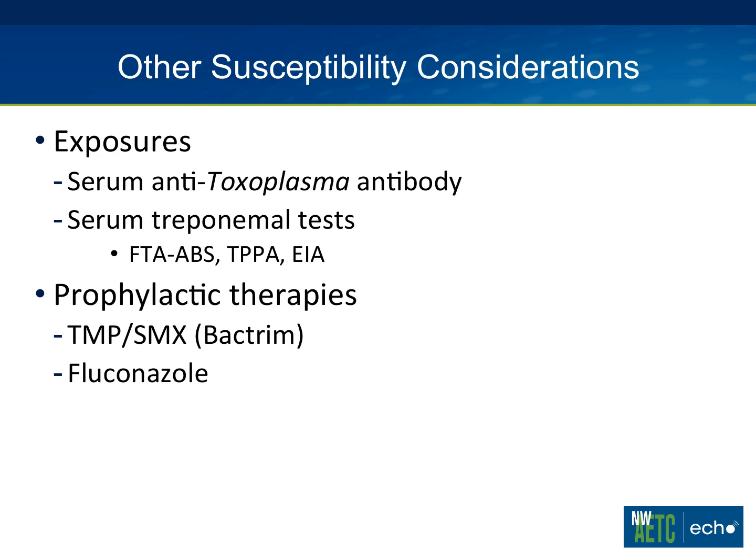Regarding prophylactic therapies, Bactrim prophylaxes against toxo — people taking Bactrim regularly are at much lower risk. And fluconazole will prophylax fairly effectively against cryptococcal meningitis.